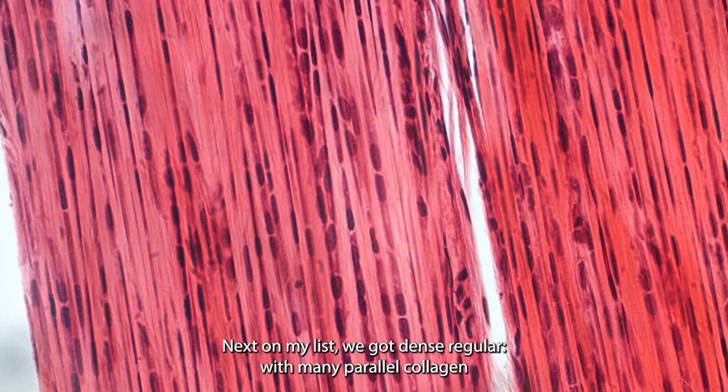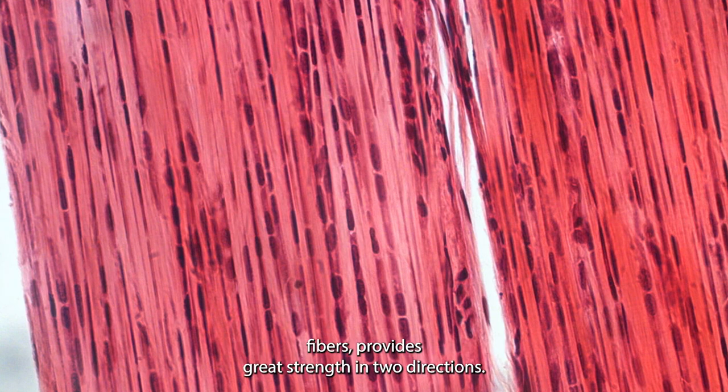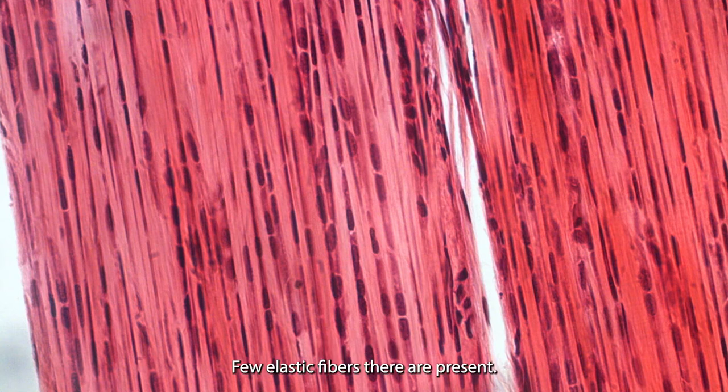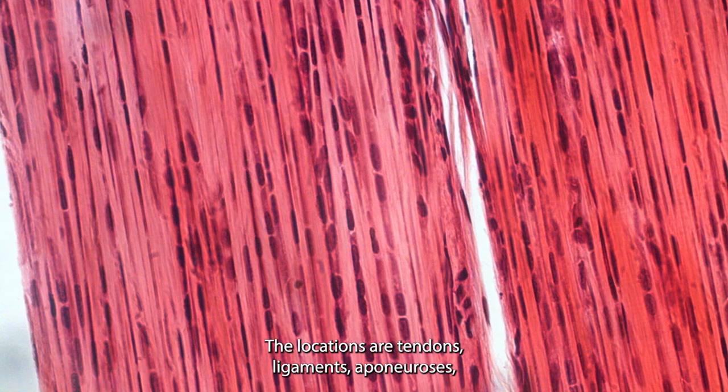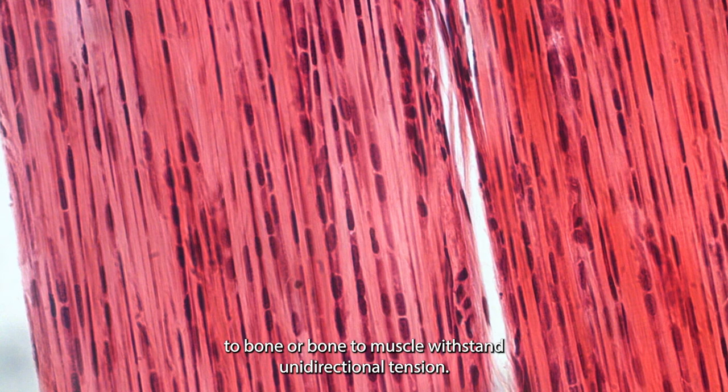Next on my list we got dense regular with many parallel collagen fibers. Provides great strength in two directions. The elastic fibers there are present. The cell type is fibroblasts. Dense regular tissue is vascular. The locations are tendons, ligaments, aponeurosis. It functionally can connect muscle to bone or bone to muscle, withstand unidirectional tension.